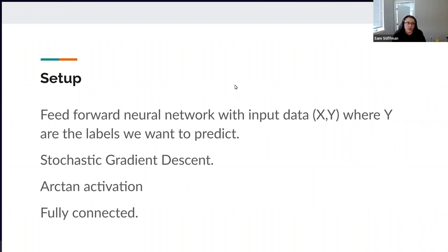For this paper, they used feed-forward neural networks with up to seven layers. They used stochastic gradient descent, which underlies some of the results. They used arctan as their activation function, and all networks were fully connected. All data was generated by the authors based on specific real-valued functions with some randomness — it was not tested on MNIST or any real dataset. The letter X denotes input data and Y denotes labels. The goal is to predict labels Y based on input data X.